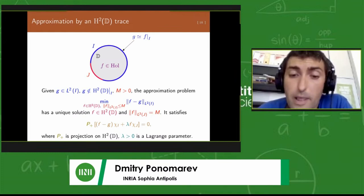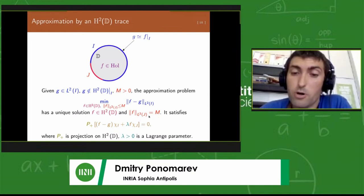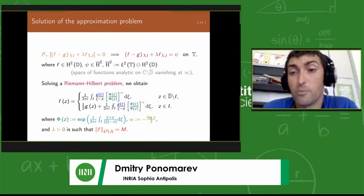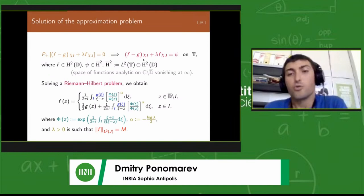But no matter what the approximating family is, the behavior of this approximant would be arbitrarily bad on the complementary part of the boundary, unless the given function is exactly the trace of a Hardy function. That means that we need to impose some constraint to regularize this problem.